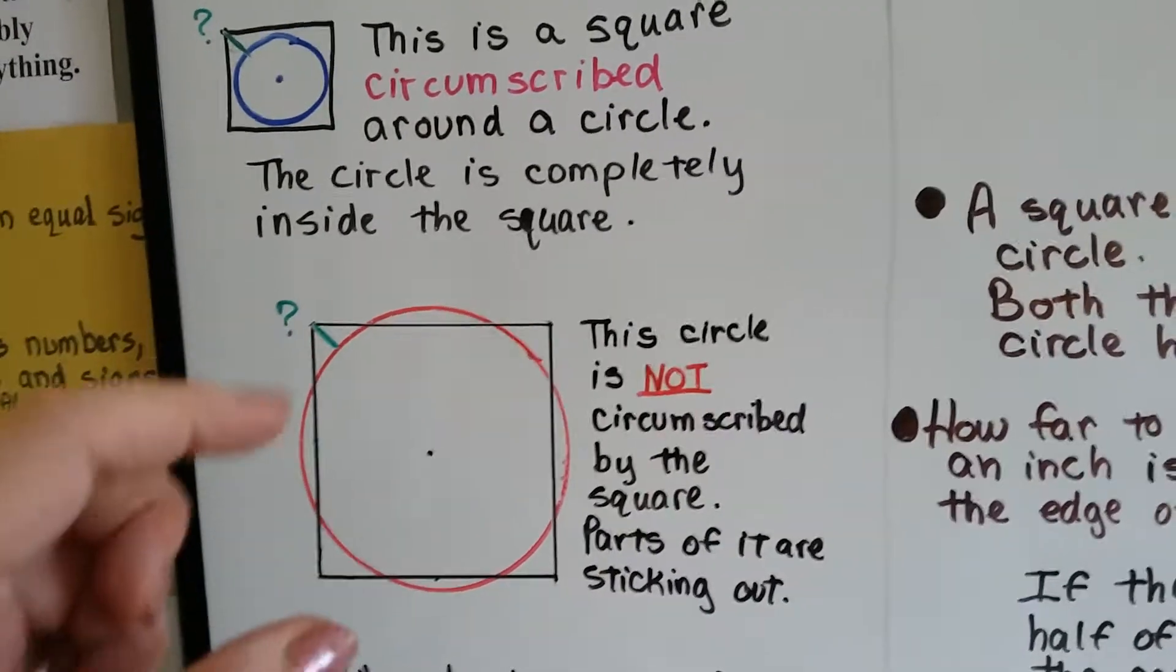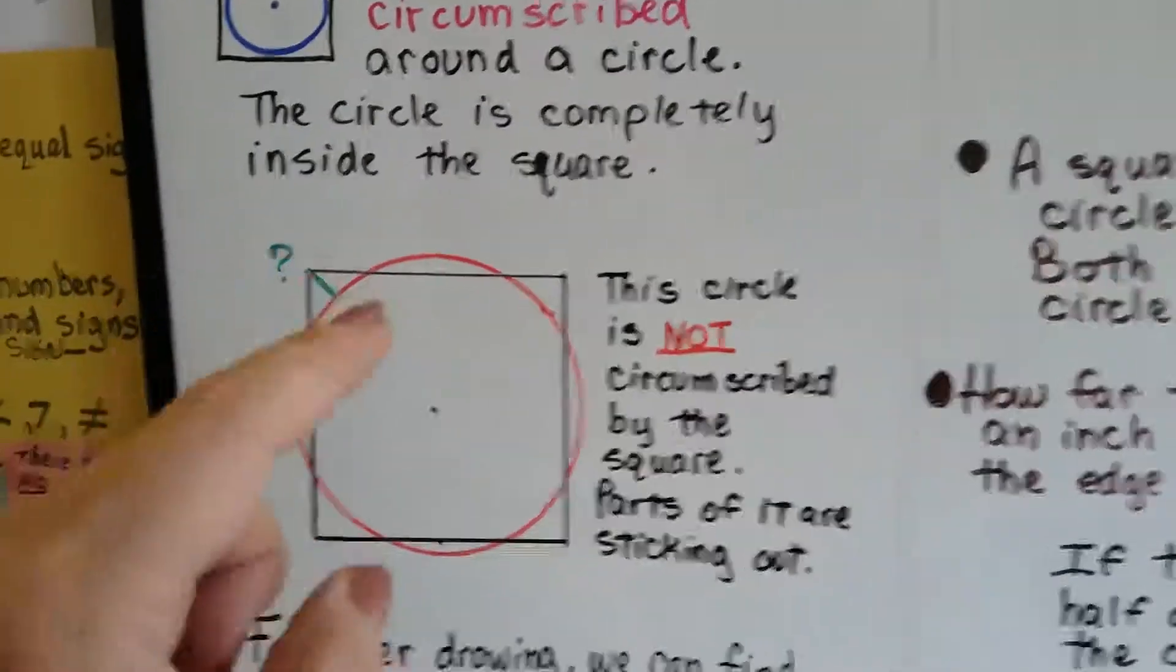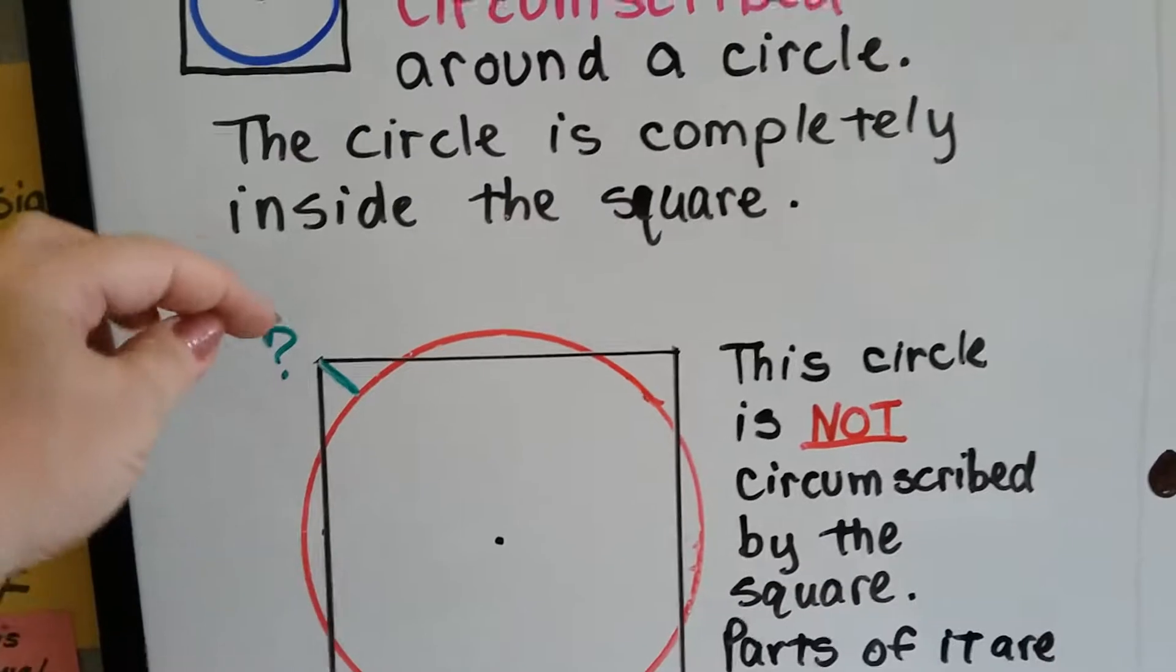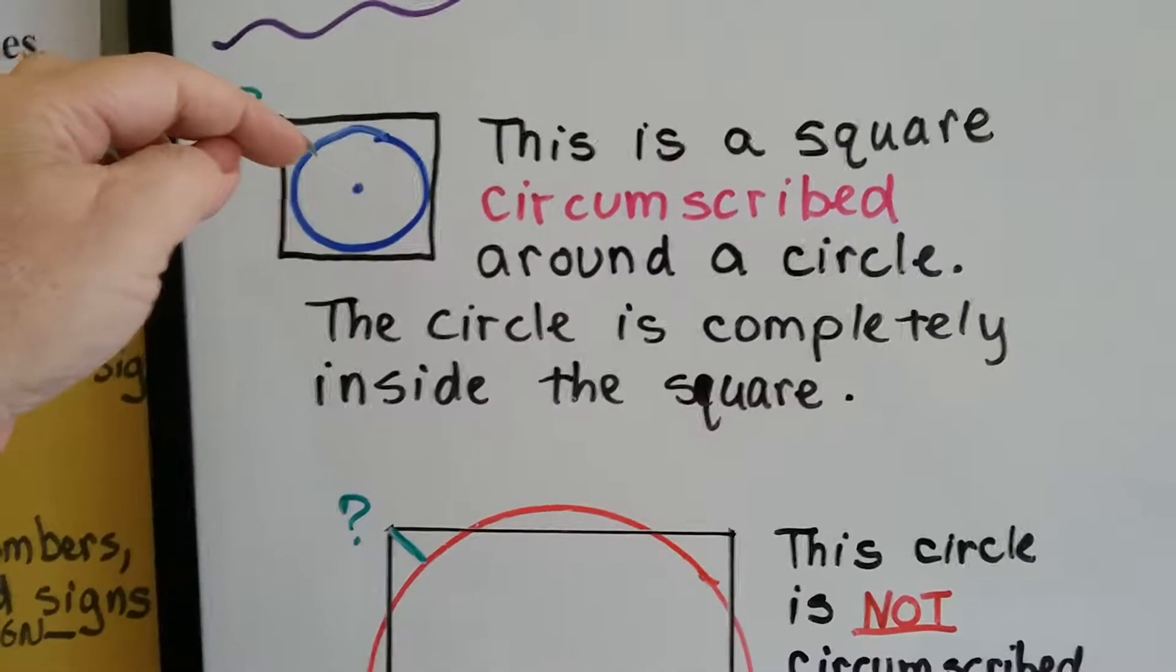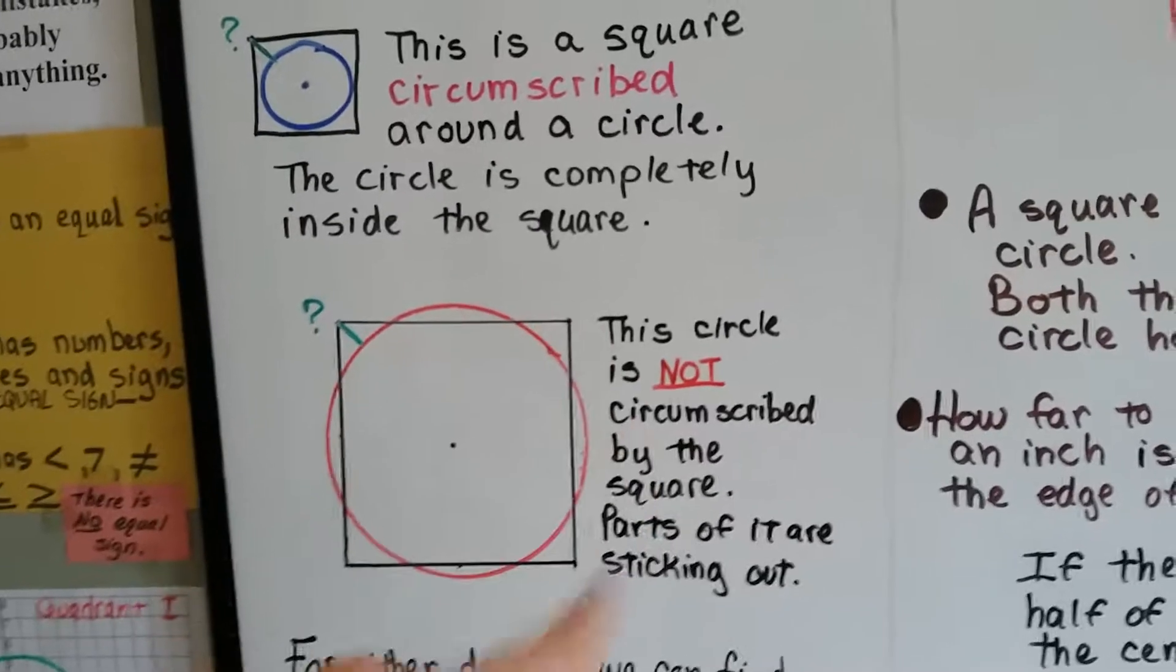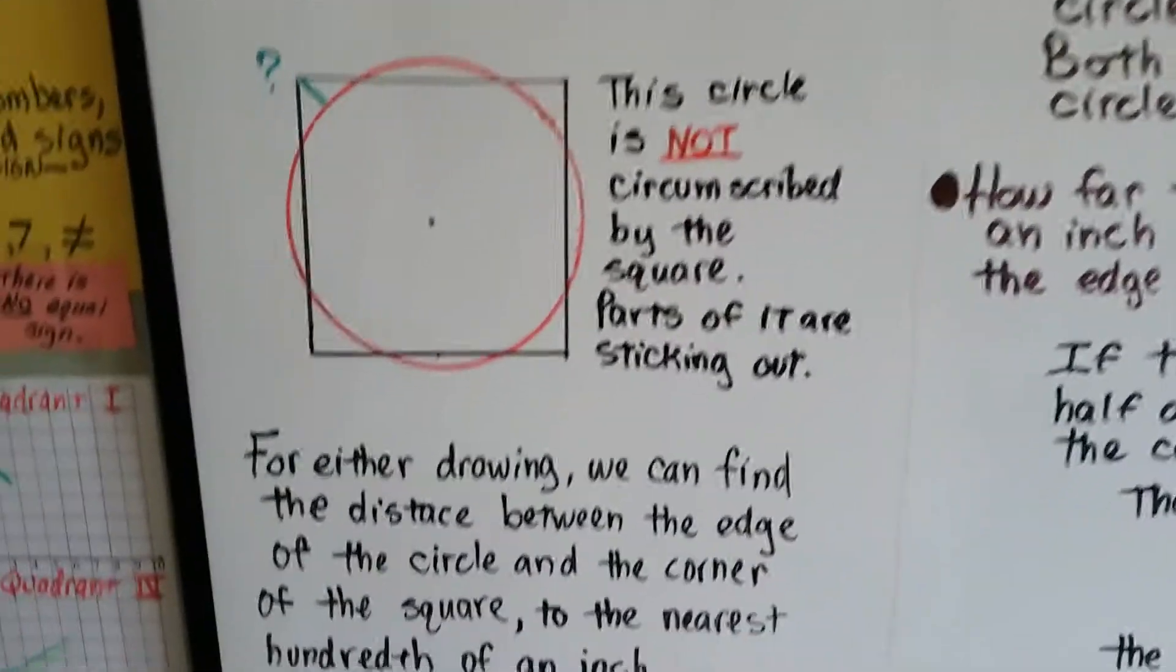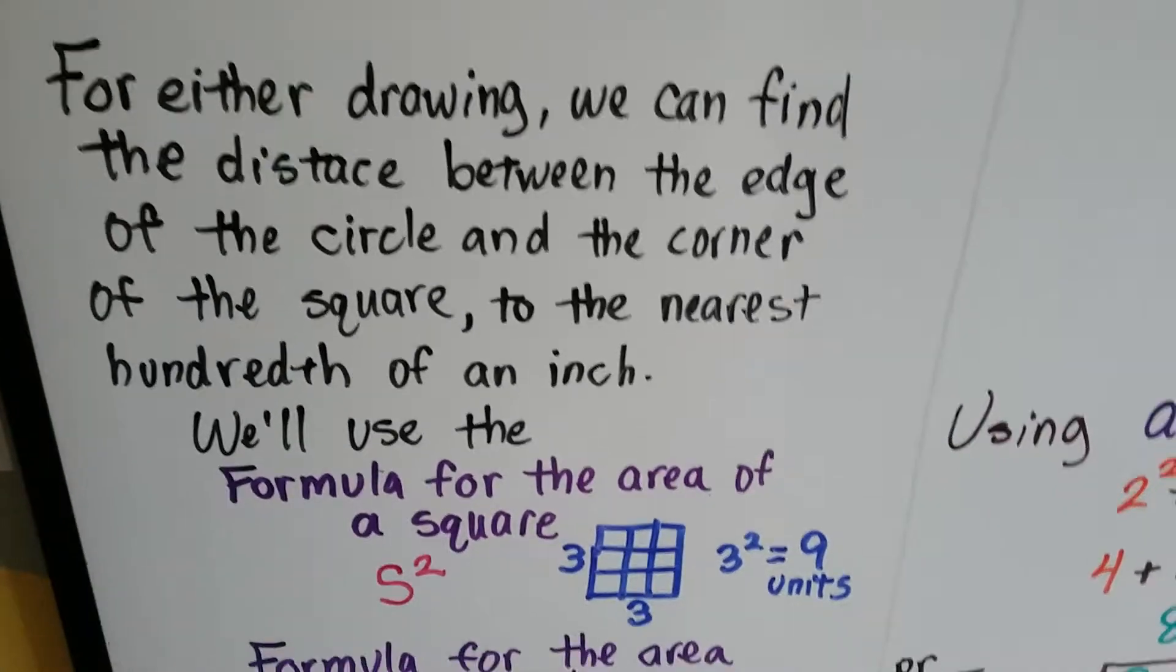We can even put a square inside of a circle and say that the square is circumscribed by the circle. We could do it either way. But what we're going to do is take a look at how far this little distance is from the edge of the circle right here to this point, this corner. So for either drawing, we can find the distance between the edge of the circle and that corner of the square to the nearest hundredth of an inch.